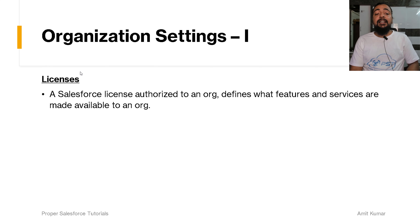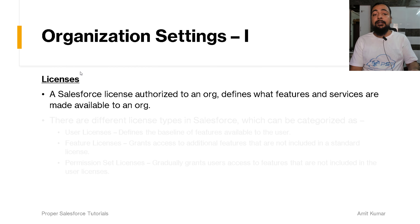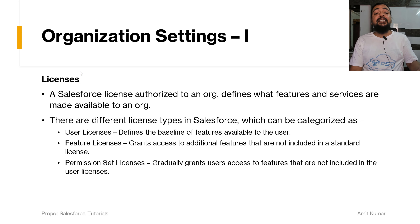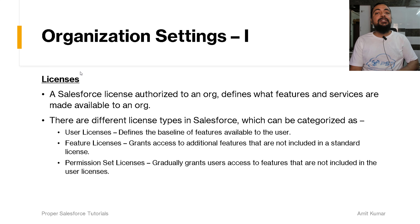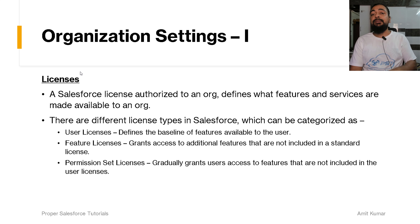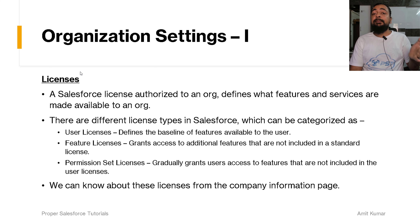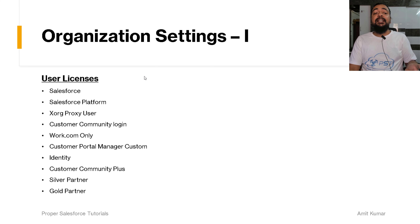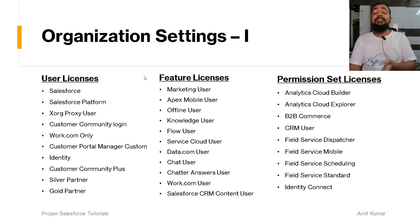Salesforce licenses authorized to an org define what features and services are made available. There are different license types: user licenses, feature licenses, and permission set licenses. User licenses define the baseline of features available to a user — each user should have a specific user license, and according to that license we provide a profile. Feature licenses grant access to additional features not included in the standard license, and permission set licenses gradually grant user access to features not included in the user license. We can find these license details on the Company Information page.